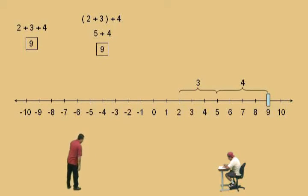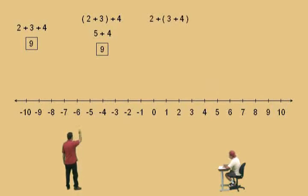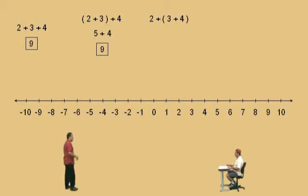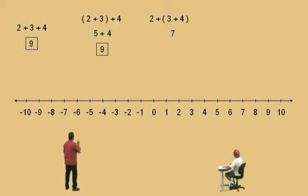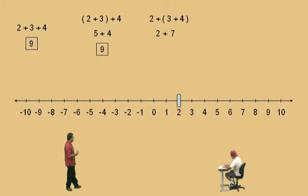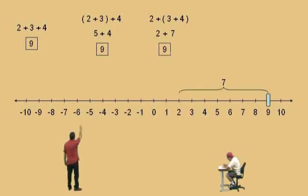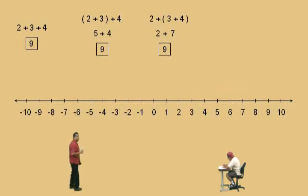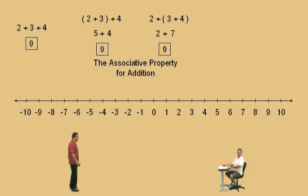Now watch this, Charlie. Here's a sum again: it's 2 plus the quantity 3 plus 4. The parentheses is telling you, do this first — add the 3 and the 4 first. So Charlie, what's 3 plus 4? 7. And to the 7 we have to add the 2, so we have 2 plus 7, and we get 9. Notice those two sums with the parentheses give the same result. That is called the associative property for addition.